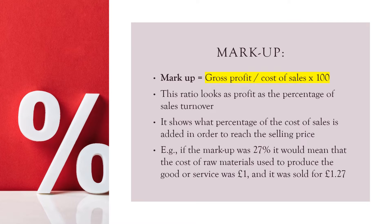Markup. Markup is gross profit divided by the cost of sales times by 100. This ratio will look at profit as a percentage of sales turnover. It shows what percentage of the cost of sales is added in order to reach the selling price. For example, if the markup was 27%, it would mean that the cost of raw materials used to produce the goods or service was £1 and it was sold for £1.27.